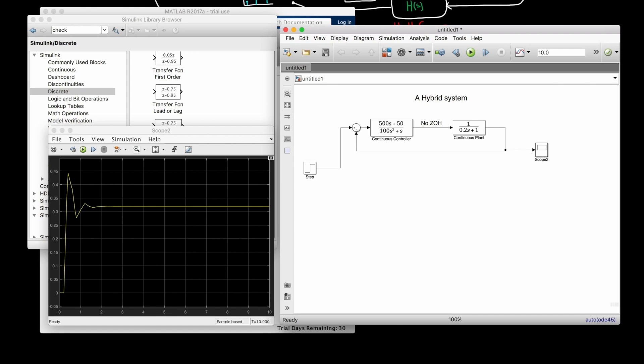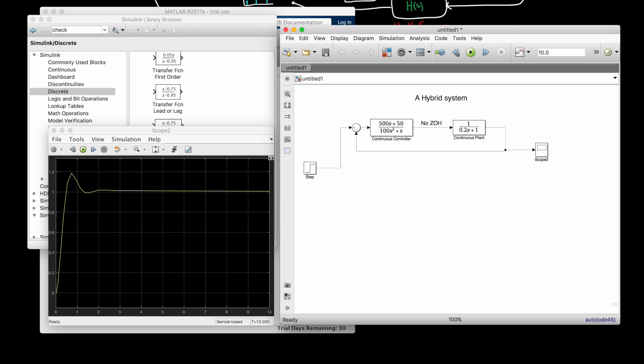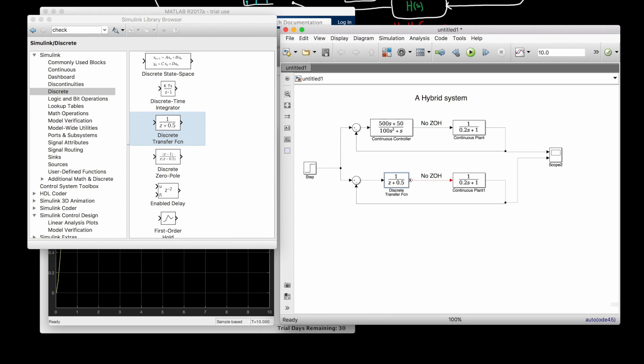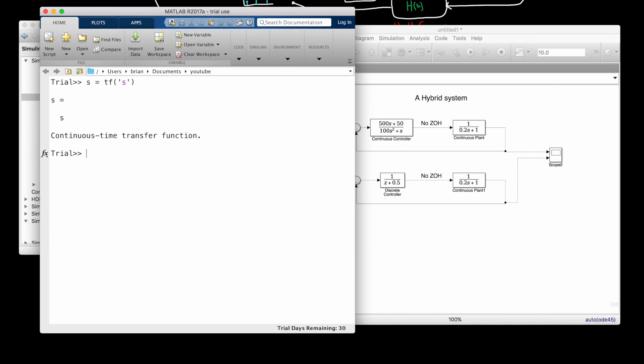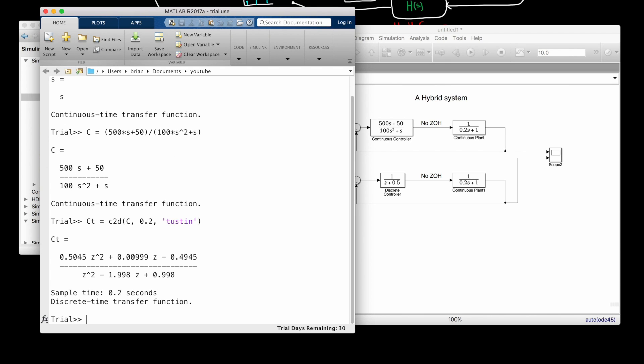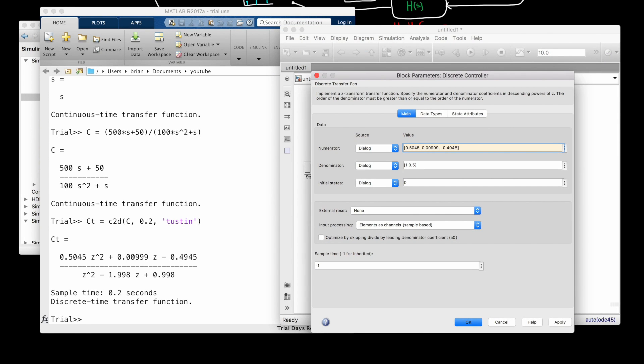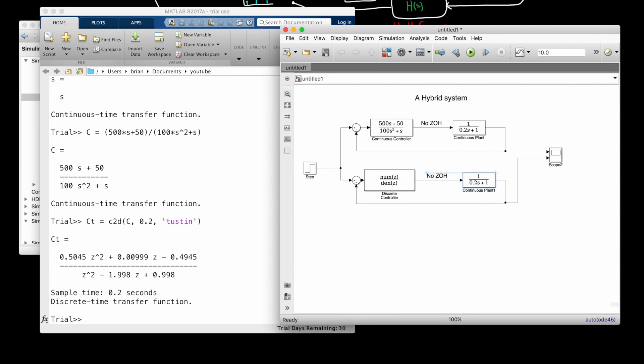The plant and controller that I've modeled here are the exact ones that we used in the first video in this series. And if I plot the closed-loop response to a step input, you can see on the left that there is about a 20% overshoot and a settle time of around 2 seconds. And this was our original design criteria. But let me show you what happens if we discretize the controller using the Tustin method. I'll go back to MATLAB and create our controller transfer function and use the function C2D with the Tustin method and a sample time of 0.2 seconds.